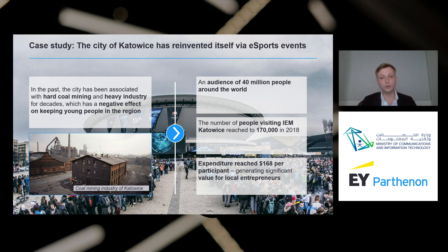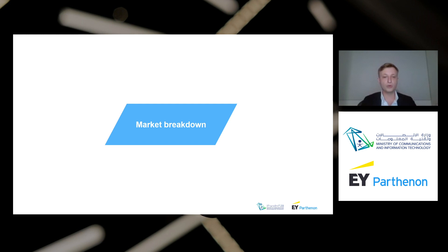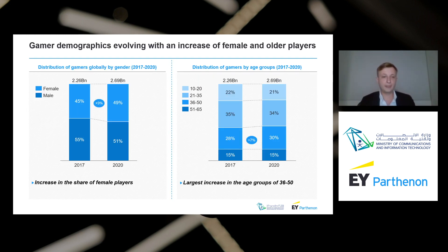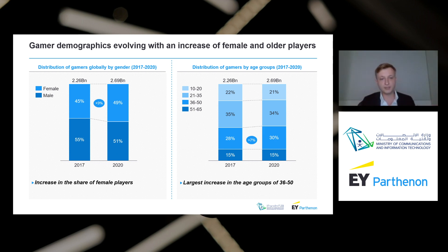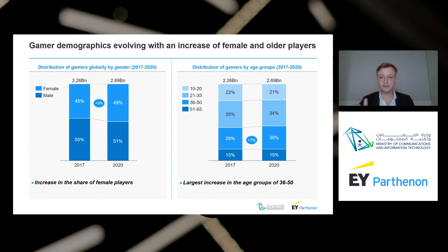Let's take a closer look at gamer demographics. Globally, the distribution of gamers by gender is converging — 49% are female, 51% are male. The distribution is also becoming more equal across age groups. The reason is quite simple: players find gaming to be a stress-relieving activity; adults use gaming to connect socially and stay mentally sharp. Older age groups are people who used to play games in their youth and are essentially revisiting that experience.